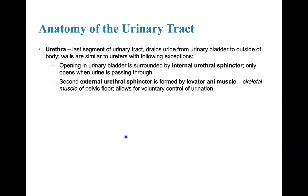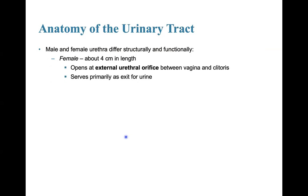The urethra is the last segment of the urinary tract, draining urine from the urinary bladder to the outside of the body. The walls are similar to the ureters, with the following exceptions: the opening in the urinary bladder is surrounded by the internal urethral sphincter, which only opens when urine is passing through. The second, external urethral sphincter is formed by the levator ani muscle, which is skeletal muscle — this is the one you have voluntary control over for urination.